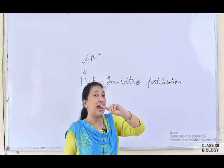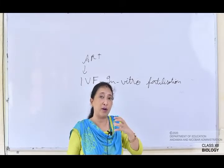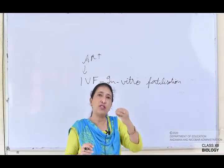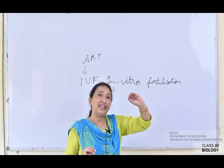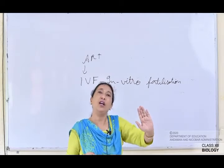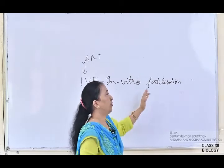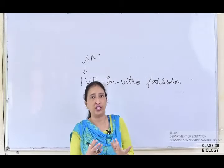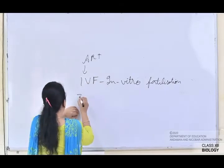The fused zygote is then implanted — either in the fallopian tube at the eight-cell blastomere stage, or directly into the uterus. In both ways IVF takes place — in vitro fertilization — and further division will occur in the uterus itself.